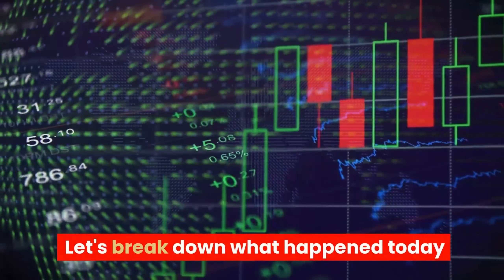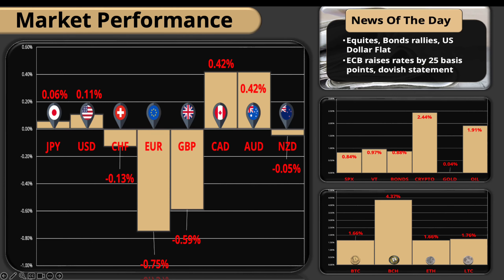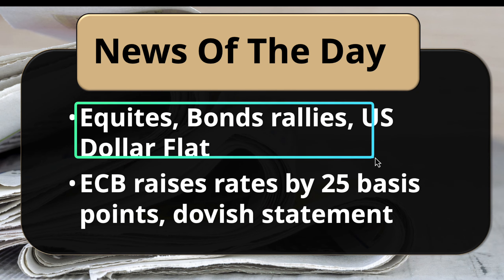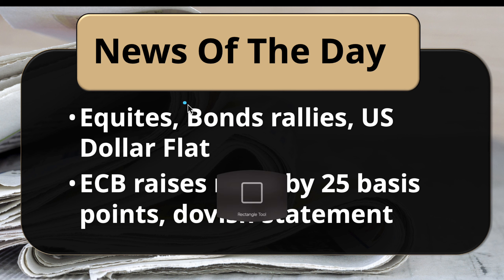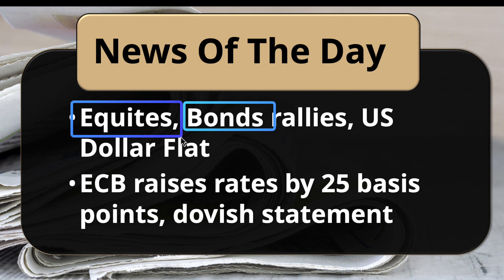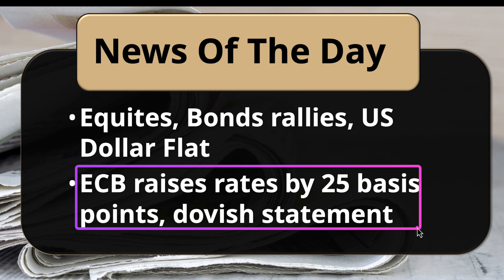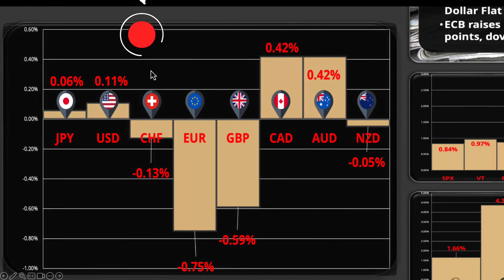Looking at the market recap today, it was really a messy day - by messy I mean things just didn't line up. We had equities, bonds, and the US dollar all sort of strong instead of weak. We didn't see a big rally in the dollar, but bonds did well, and usually bonds weigh down equities - but that was not the case today. We also had strong data out of the US, and the ECB was the biggest mover - they raised rates by 25 basis points but the statement was really dovish. They're concerned about growth and the outlook in the eurozone, and that really took the currency to the downside.